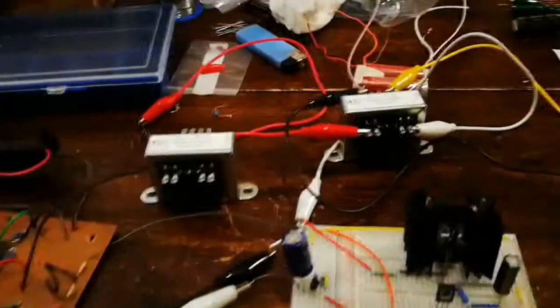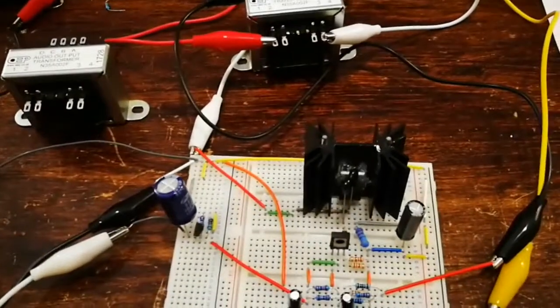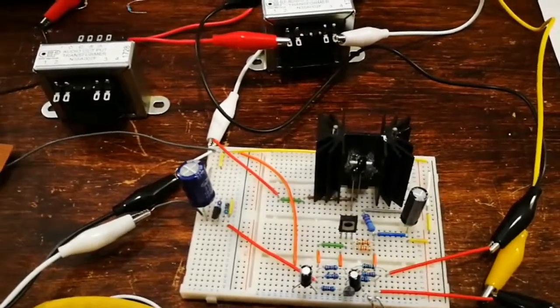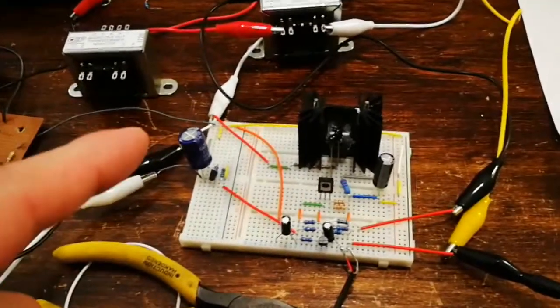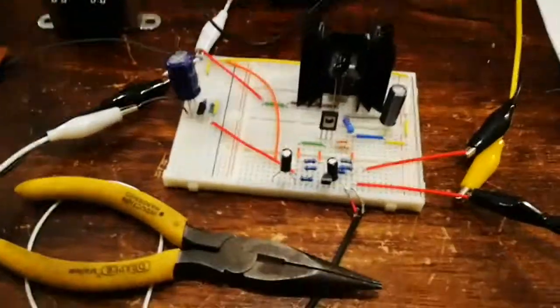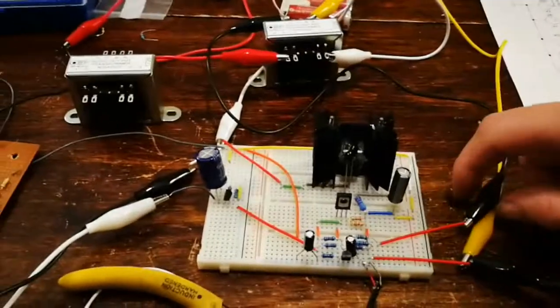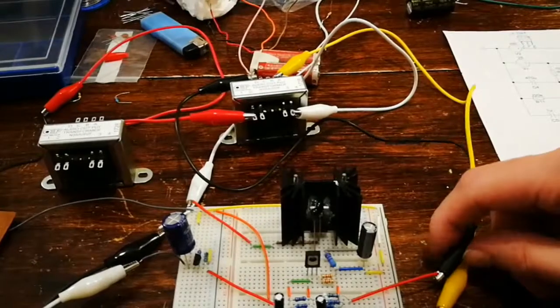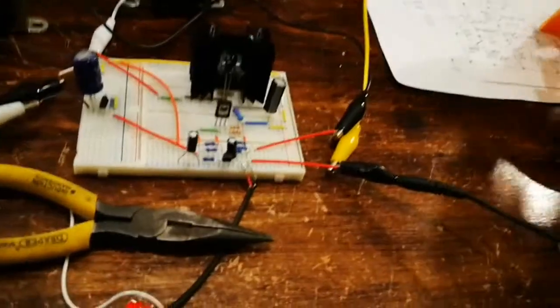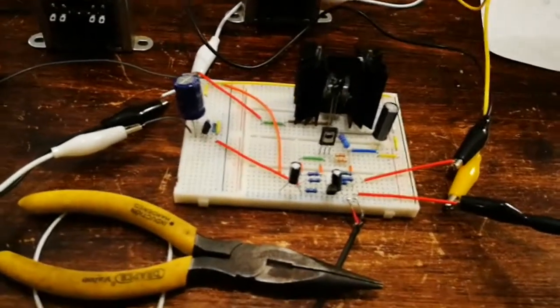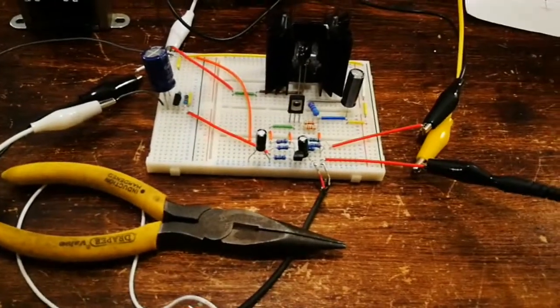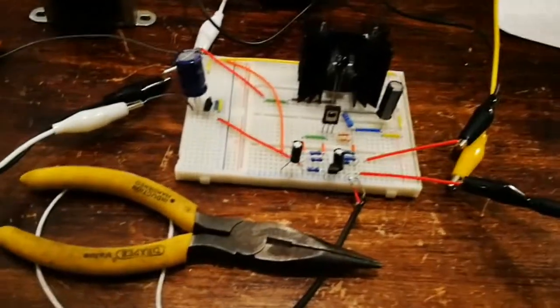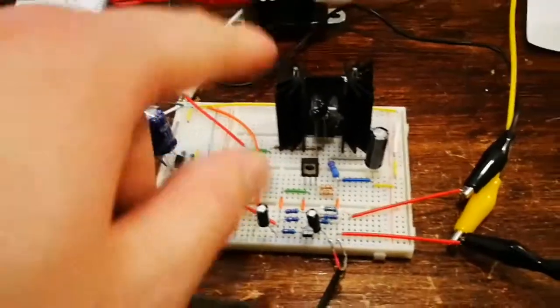So yeah, it works. It's a single-ended transformer coupled transistor amplifier. And it actually sounds pretty damn good. If I pull the negative feedback loop off... You can hear the difference in volume there, because all of a sudden it's then running at full gain. So it loses all its bass. It loses all its definition. It's not actually that bad sounding. It's not overly distorted. But yeah, so I'm not sure now.